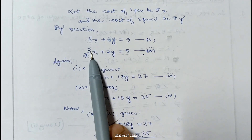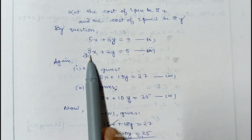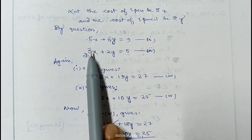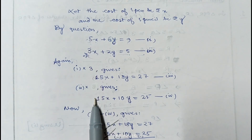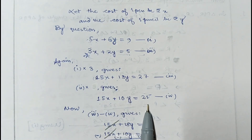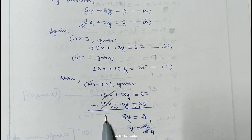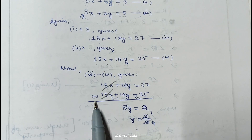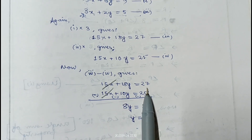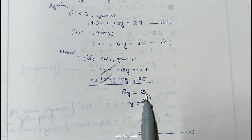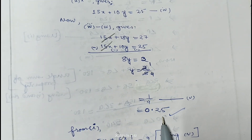We multiply equation 1 by 3 (coefficient of x in equation 2): giving 15x plus 18y equals 27. We multiply equation 2 by 5 (coefficient of x in equation 1): giving 15x plus 10y equals 25. Subtracting, the x terms cancel: 18y minus 10y gives 8y equals 27 minus 25, which is 2. So y equals 2 by 8, meaning 1 by 4, which is 0.25.